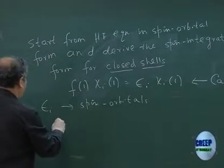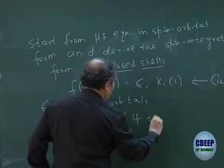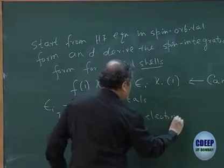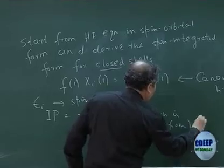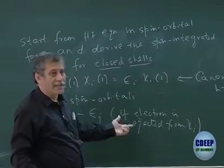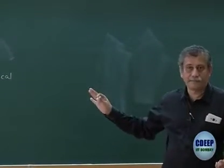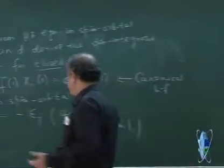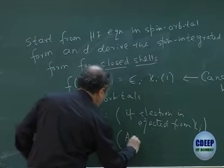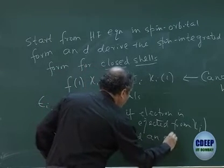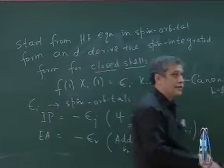The ionization potential is minus epsilon_j if an electron is ejected from chi_j — meaning in the N-1 electron determinant, chi_j is absent. And if you add an electron to an orbital r, then the electron affinity is minus epsilon_r.